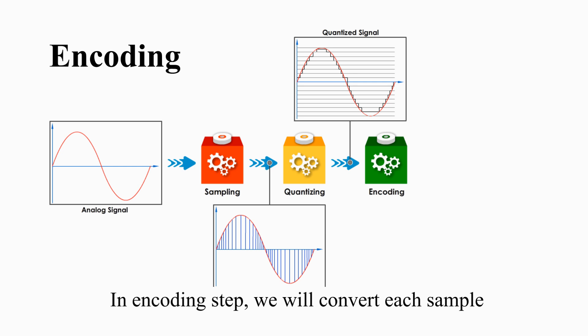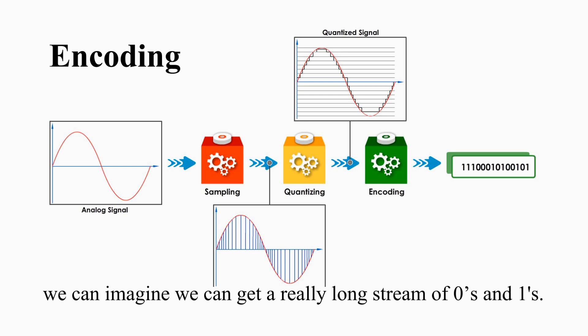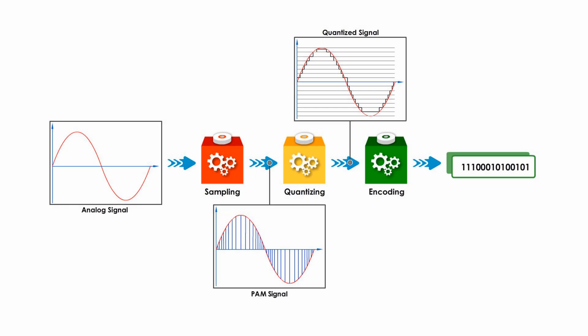In the encoding step, we will convert each sample from right to left in time order to specific binary numbers. From 1-second analog data, we can get a long stream of 0s and 1s. From a 10-minute telephone call, we can imagine we can get a really long stream of 0s and 1s.